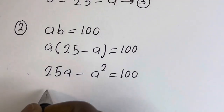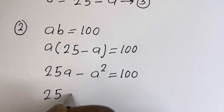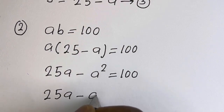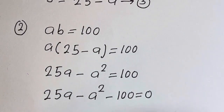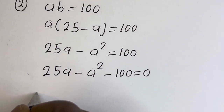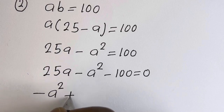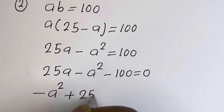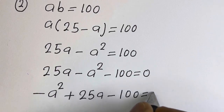This gives us 25A minus A squared minus 100 is equal to 0. Rearranging: minus A squared plus 25A minus 100 is equal to 0.